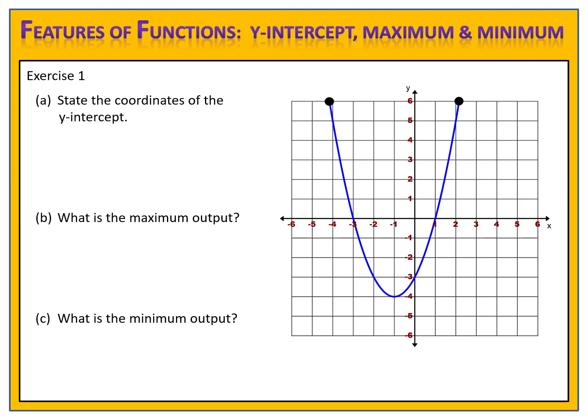We identify the point where the graph passes through the y-axis. Sometimes folks will ask why I write the word 'point' in front of those coordinates. It's true that it's not necessary to write that; however, I write it for the sake of clarity. Zero, negative 3 written in parentheses could be interval notation for an inequality, or it could be a point on the coordinate plane. I like to write the word 'point' to make it very clear what I mean.